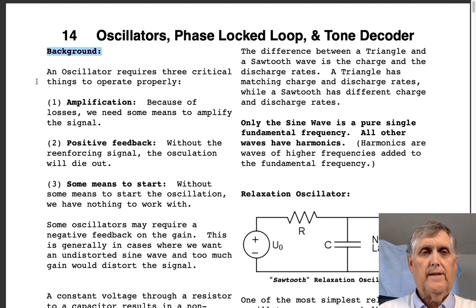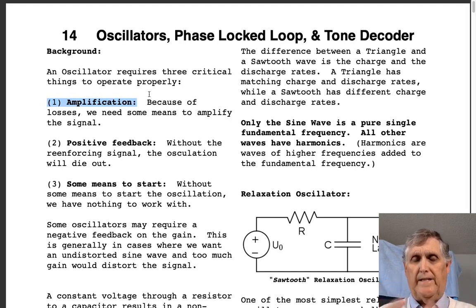Now, before we get started, let's get some background. An oscillator requires three critical things to operate. The first being amplification. Because of losses, there has to be some way to amplify the signal. If there's no amplification, you might start off with a good oscillation, but it'll tamp down as we get through it.